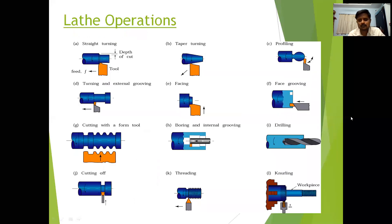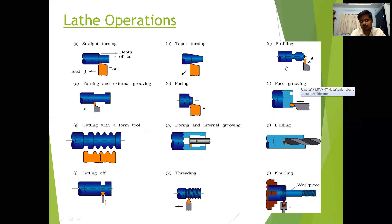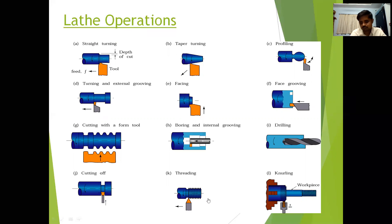These are the lathe operations: straight turning, taper turning, profiling — which you can call a forming operation to get any profile on the given workpiece — turning and facing, grooving, drilling, boring, cutting a thread, parting off, and knurling. In addition to these operations, you can perform grinding, milling and other operations. Thank you.